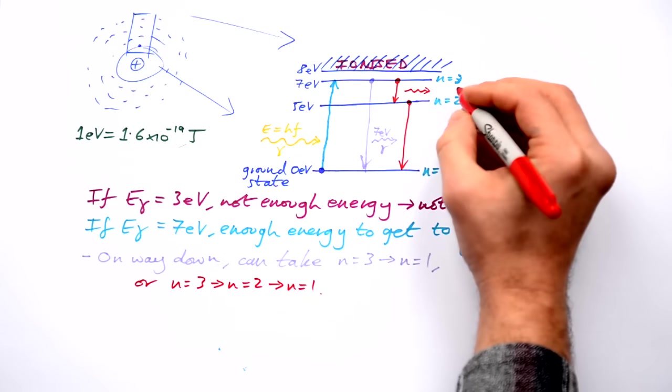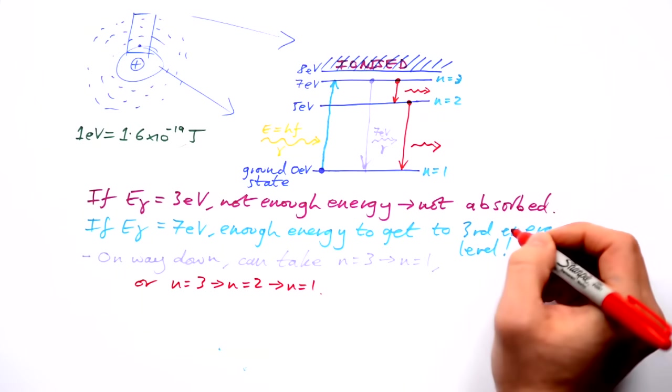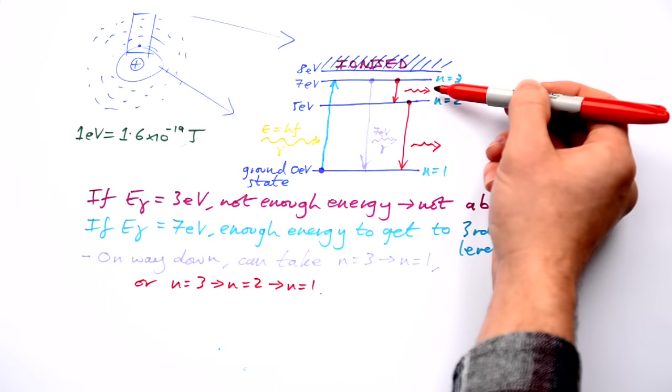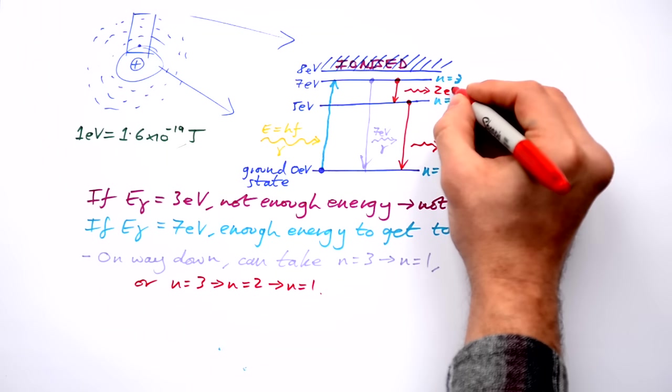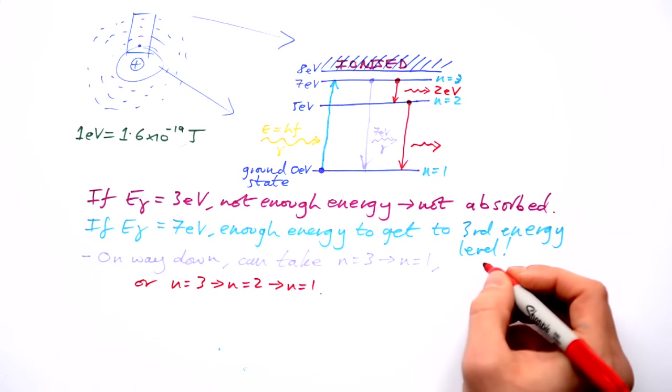Both of these will release photons. What's the energy of this photon going to be? Well it's gone from seven electron volts to five electron volts. So this photon is going to have two electron volts of energy.